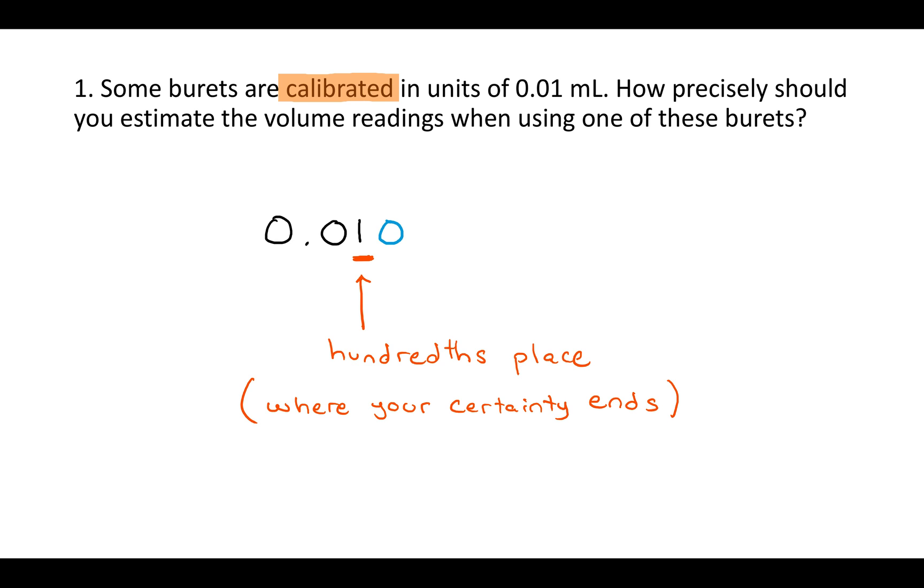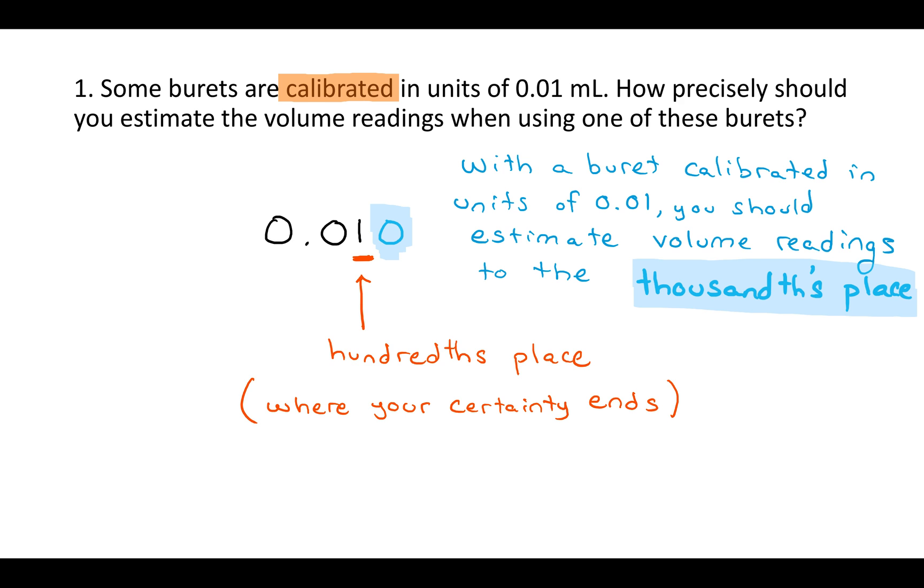By convention, whenever you read a number of significant figures off of a piece of glassware, you always look for the place, the decimal place, to which they added the lines. And then you read the number to the next place, the place where you have to estimate. If a piece of glassware is calibrated to the hundredths place, you would write the answer to the thousandths place.